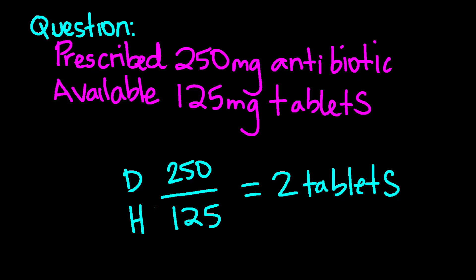Here's an example: your patient has been prescribed 250 milligrams of an antibiotic. The antibiotic comes in 125 milligram tablets. How many tablets will the RN administer? Ask yourself — what is the desired dose? It's 250 mg. Divide by what's on hand: 125 mg. That equals two tablets.